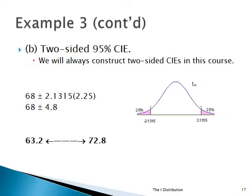In Part B, no one made any claims. You have sample evidence and just want to construct a two-sided confidence interval. Confidence intervals in this course are always going to be two-sided. We have the sample mean of 68, and we want to construct a two-sided 95% confidence interval.